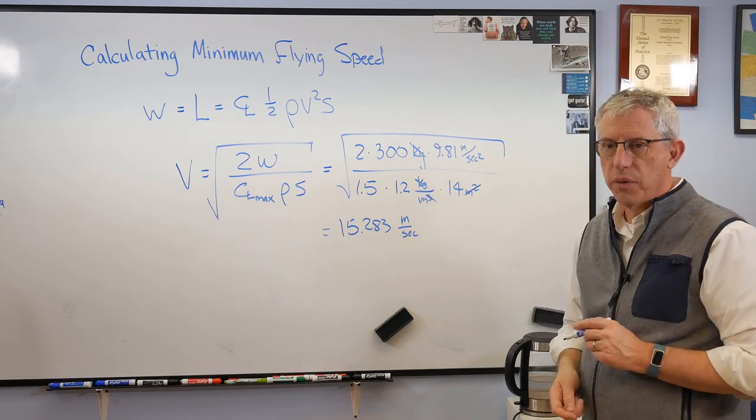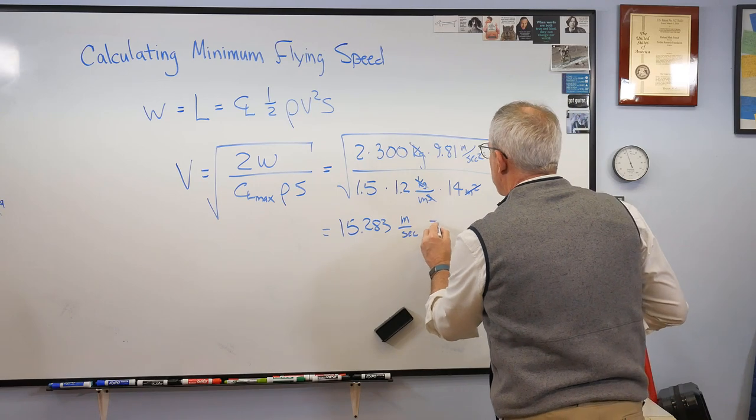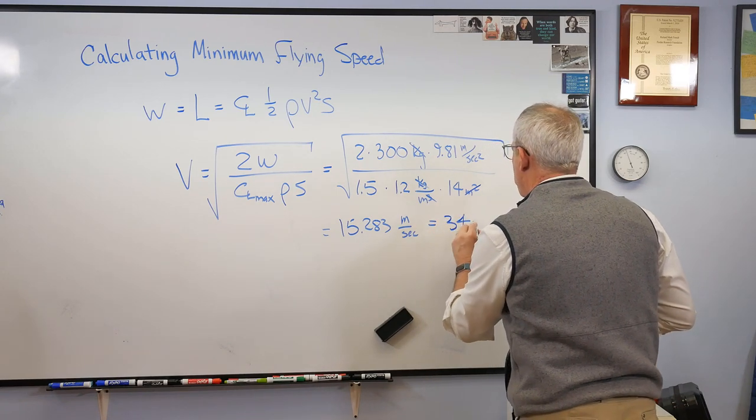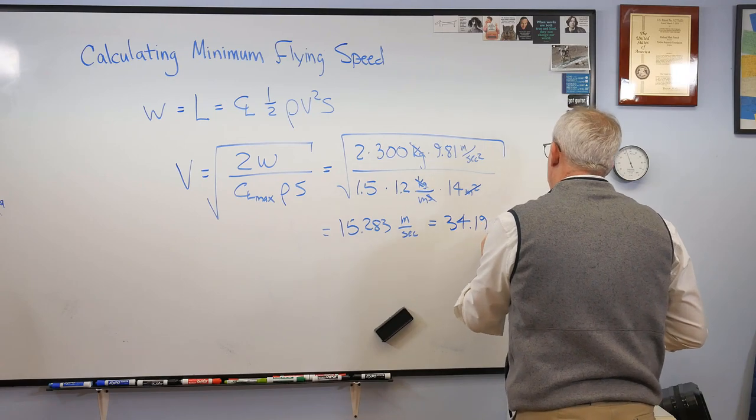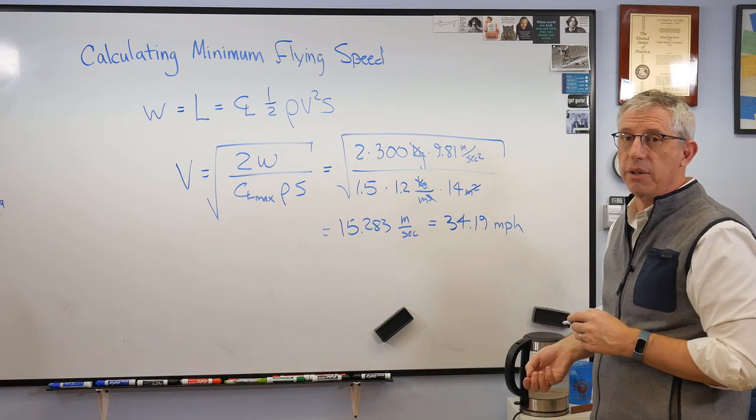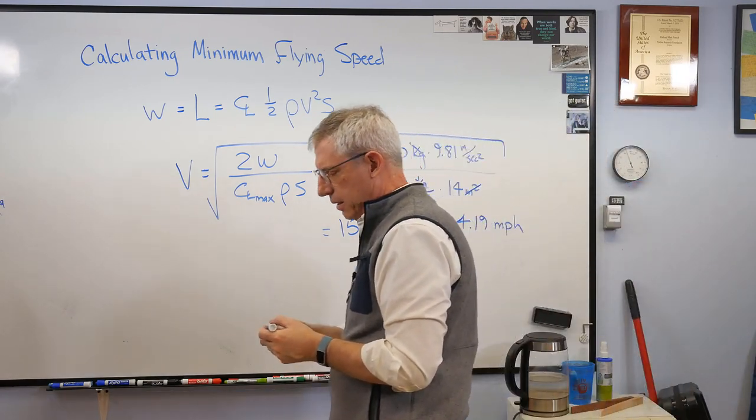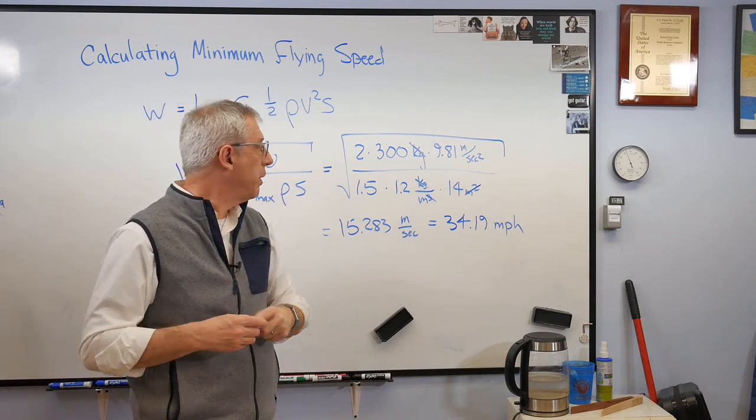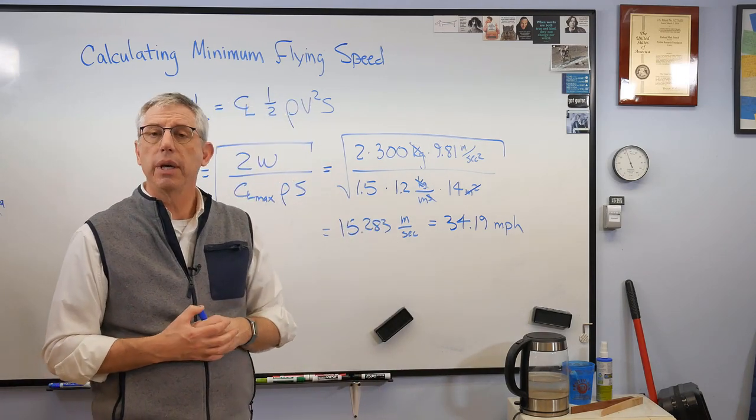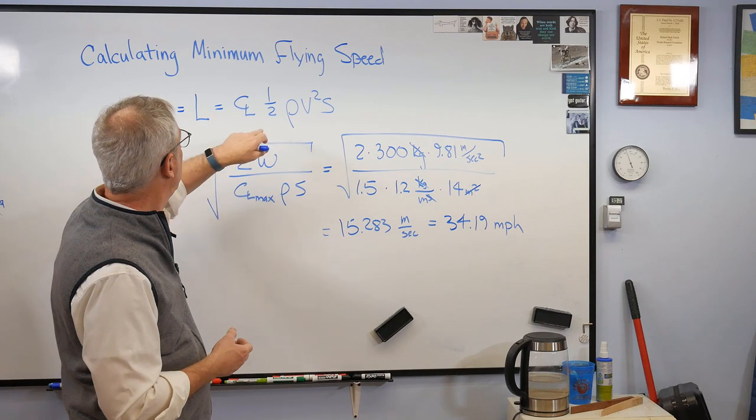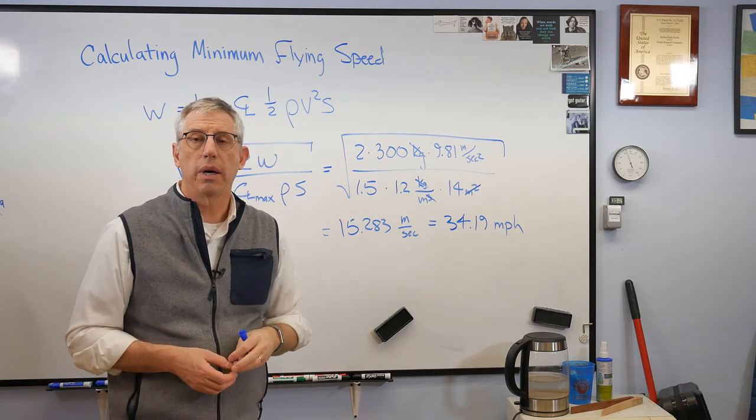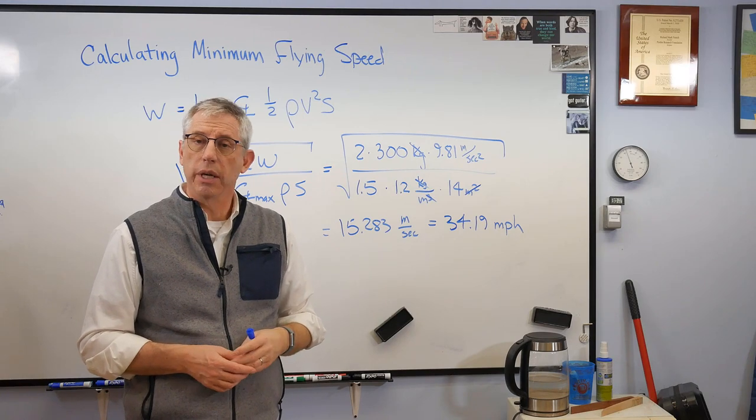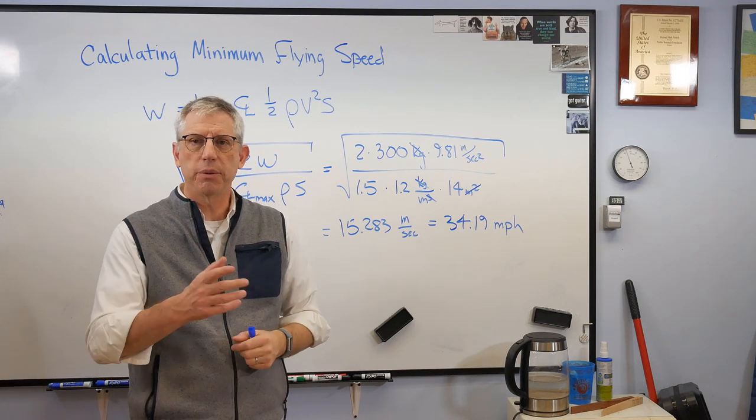Now, if you want this in goofy English units, this is going to be 34.19 pretty much miles per hour. And I'm sorry, I do think in those units. Well, not pretty, but there it is. So anyway, this is a real simple calculation. It's based pretty much on the area of the wing and its maximum lift coefficient. Pretty simple. Hope this helps. And we'll talk to you next time.